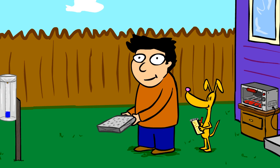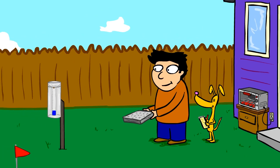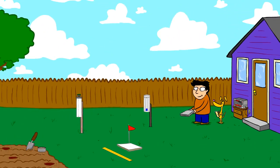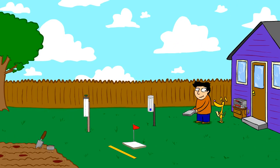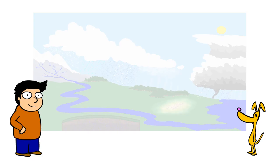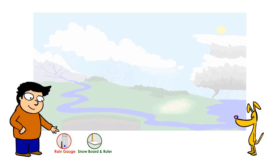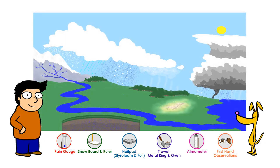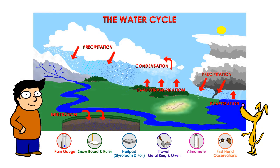CoCoRaHS volunteers are able to use relatively low-cost tools to collect a wide variety of atmospheric data across multiple points of the water cycle. In this video, we will briefly overview each one of these tools, which measurements they provide, and what part of the water cycle it relates to.